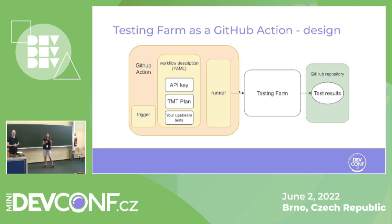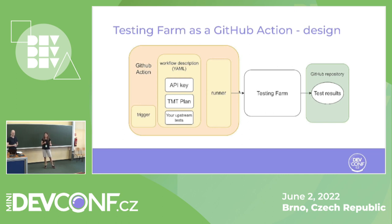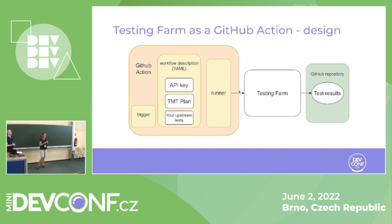GitHub Actions can be used for describing the workflow in the YAML file and for triggering the workflow. They offer a runner, and the runner can communicate with the Testing Farm via its HTTP API. So we can describe our workflow — the API, the TMT plan, and the upstream tests — we can put all of that into the workflow of the GitHub Action, and trigger the Testing Farm with the GitHub Action directly from GitHub.